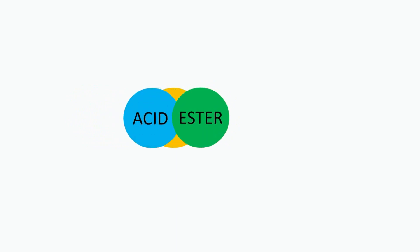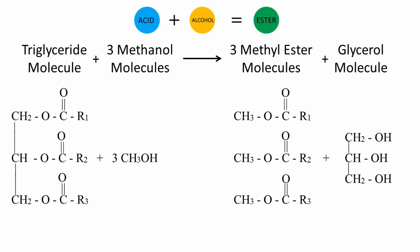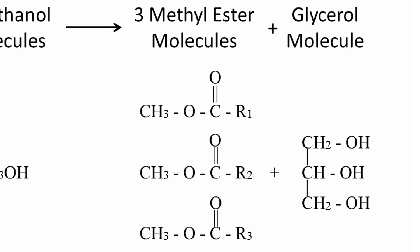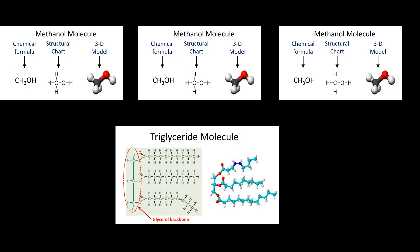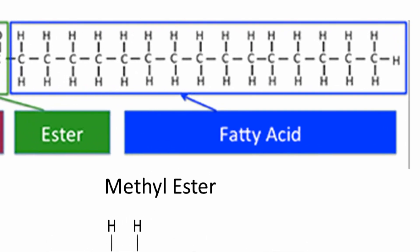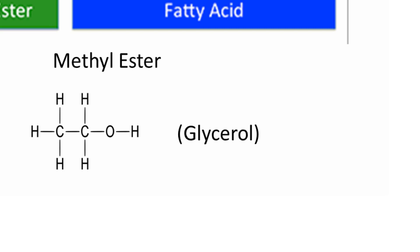Esters are a class of compounds derived from the reaction of an acid and an alcohol. For example, the reaction of fatty acids and methanol produces methyl esters, or biodiesel. The molecular formula for a methyl ester is RCO2CH3, where R represents the fatty acid. Using three methanol molecules and one triglyceride molecule, construct three methyl ester molecules. Each methyl ester molecule may be different depending upon the fatty acid used to make it. You should have one glycerol molecule left over.